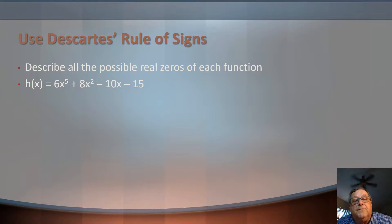We're talking about going from positive to negative, back and forth. Here we go from a positive 8x squared to a negative 10x, so we've got one sign change, which tells us that we can have one positive real zero.